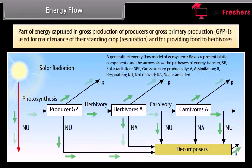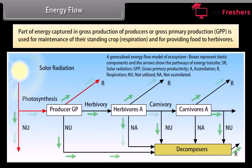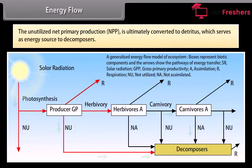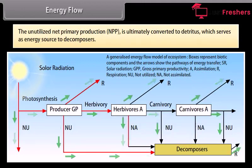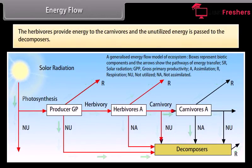Producers capture only a small fraction of solar energy and the bulk of unutilized energy is dissipated mostly as heat. Part of energy captured in gross primary production, GPP, is used for maintenance of their standing crop, respiration, and for providing food to herbivores. The unutilized net primary production, NPP, is ultimately converted to detritus which serves as energy source to decomposers. The herbivores provide energy to the carnivores and the unutilized energy is passed to the decomposers.